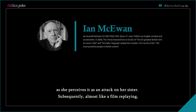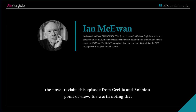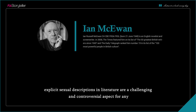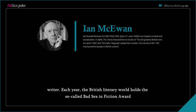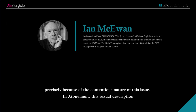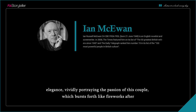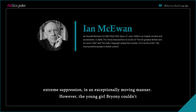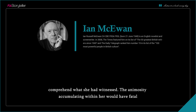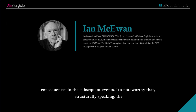Subsequently, almost like a film replaying, the novel revisits this episode from Cecilia and Robbie's point of view. It's worth noting that explicit sexual descriptions in literature are a challenging and controversial aspect for any writer — the British literary world even holds the so-called Bad Sex in Fiction Award because of this. In Atonement, this description not only advances the plot but is executed with precision and elegance, vividly portraying the passion of this couple bursting forth like fireworks after extreme suppression. However, the young girl Bryony couldn't comprehend what she had witnessed, and the animosity accumulating within her would have fatal consequences in the subsequent events.